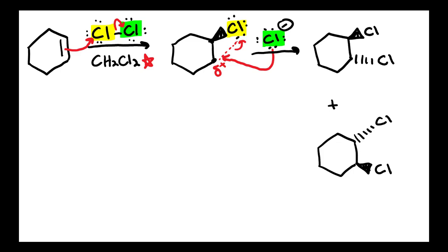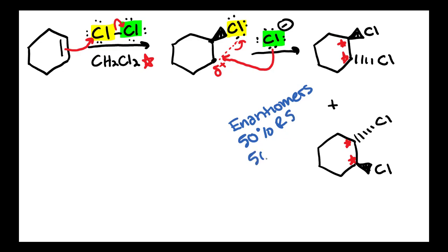So these would be your two products. In this case, we have two chiral centers — one here and one here. The relationship between these two molecules: we always want to double-check if there are two chiral centers to make sure the molecule is not meso. We're going to check — do we see a plane of symmetry? We do not. So we can confirm that these are indeed chiral molecules, and that means the relationship is they are enantiomers. We get 50% of the R and 50% of the S. Because there are two chiral centers, we could get 50% RS and 50% SR — but the point is we get 50% of both enantiomers, which is known as a racemic mixture.